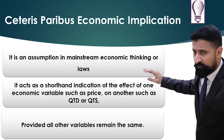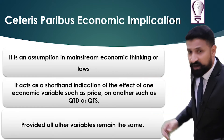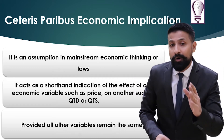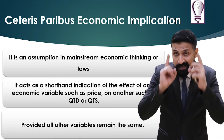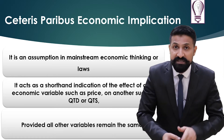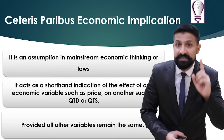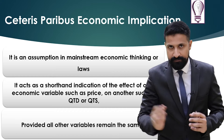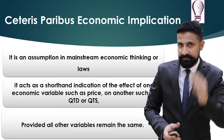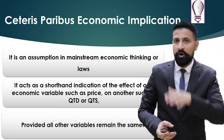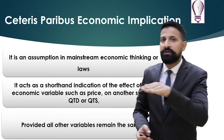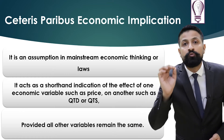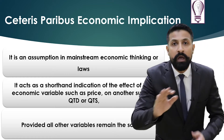Provided all other variables are constant, keep it in your mind. Ceteris paribus means you will only be discussing two variables — two variables will move, such as price and quantity demanded, or price and quantity supplied. The ceteris paribus concept says only those two variables will move.